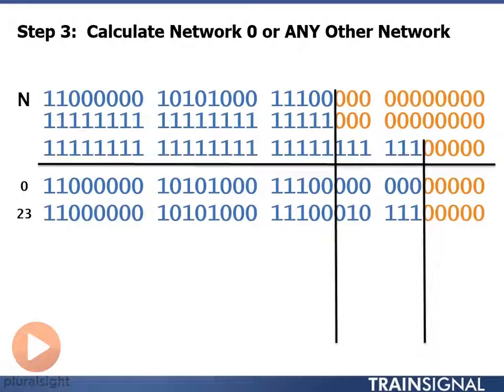Network number 23, I convert 23 to binary, put it into 6 bits, and move it into my borrowed bits section of the address.